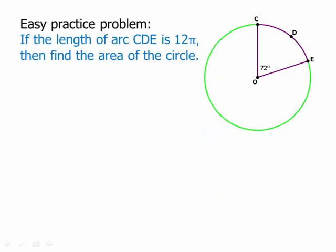Here's a very easy practice problem — pause the video and then we'll talk about it. If the length of the arc is 12π, find the area of the circle. We're given the angle, so the first thing we're going to do is figure out how much of the circle we have — put that angle over 360. And 72 divided by 360: 72 is 2 times 36, so we have 2 times 36 over 10 times 36, which is 2 over 10.